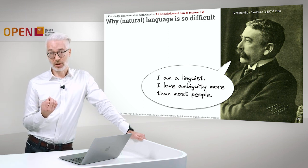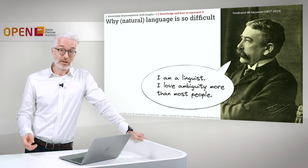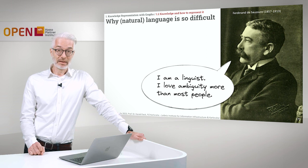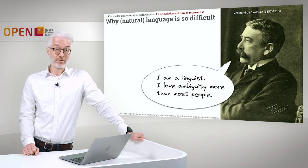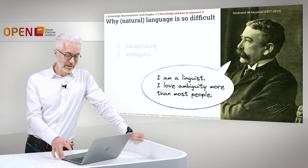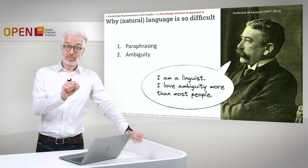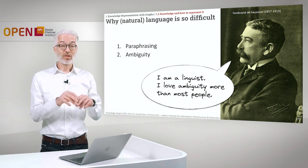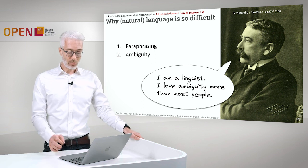So what makes natural language so difficult? Here I want to present my friend Ferdinand de Saussure — one of the principal linguists and founders of the discipline of linguistics, who lived in the 19th century. I'm making him say: 'I'm a linguist, I love ambiguity more than most people.' Think about that sentence — it's ambiguous. Ambiguity is one of the difficult things for language. The other thing is you can do it the other way around: ambiguity means one expression stands for many different concepts, whereas paraphrasing means you can denote the same concept with many different words. Paraphrasing and ambiguity are the two major difficulties that make language so challenging.